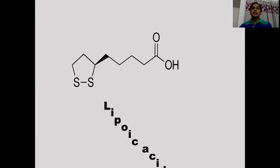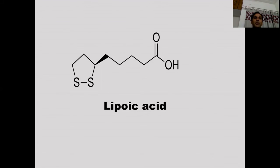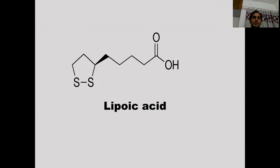Lipoic acid, also known as alpha-lipoic acid (ALA) and thioctic acid, is an organosulfur compound derived from caprylic acid (octanoic acid). One of its most studied roles is as a cofactor of the pyruvate dehydrogenase complex. Only the dextro-enantiomer exists in nature, and it is essential for aerobic metabolism. ALA is a cofactor in DNA synthesis and both fatty acid and amino acid metabolism.